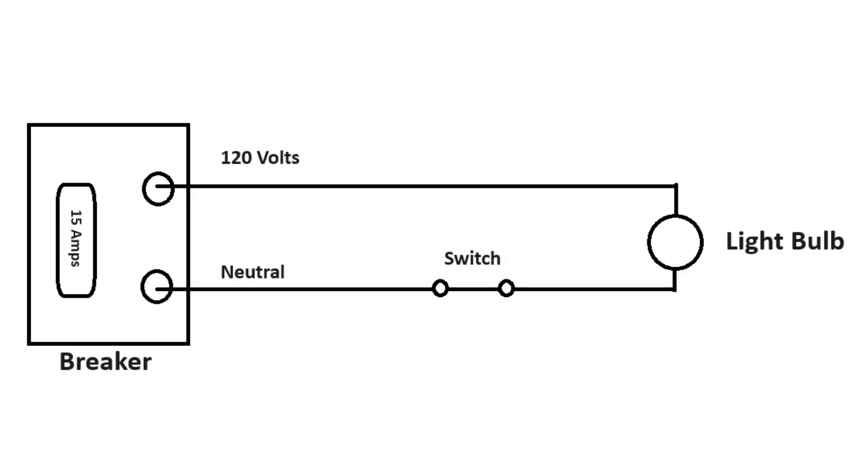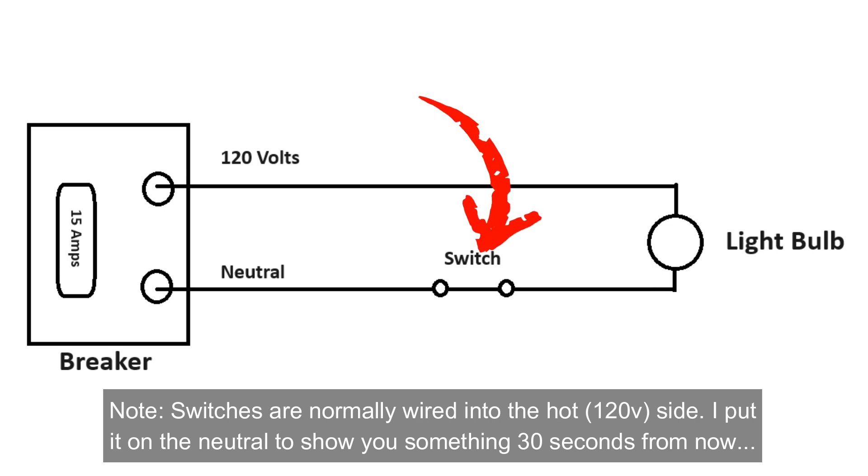As you can see here, we have a very simple circuit. We have our power source, which is the breaker. We have a wire carrying that power to a device that consumes it, which is the light bulb. And we have our neutral wire going back to the power source, back to the breaker again, and that's a full complete circuit. And we have a switch in there that allows us to turn this circuit on and off.